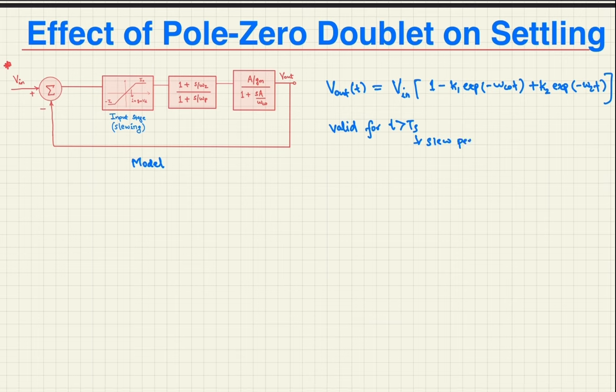Additionally, you have the constraint that k1 plus k2 is 1, and k2 is omega Z minus omega P by omega C0. You get these when you actually do the derivations. The first term here is expected since the UGB should determine the settling behavior. However, the second term suggests that we have a slow settling component with an amplitude proportional to the doublet frequency spacing and time constant proportional to 1 over the doublet frequency.